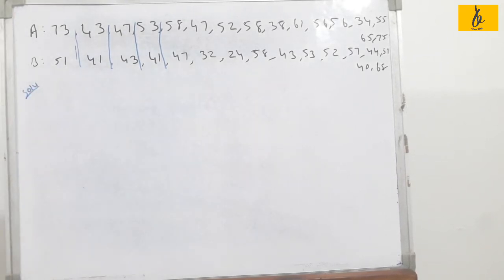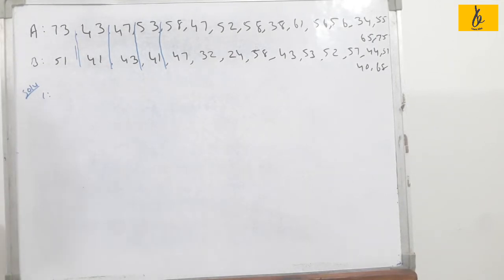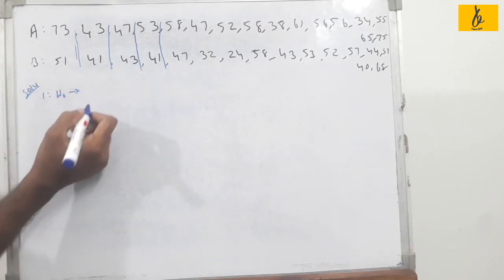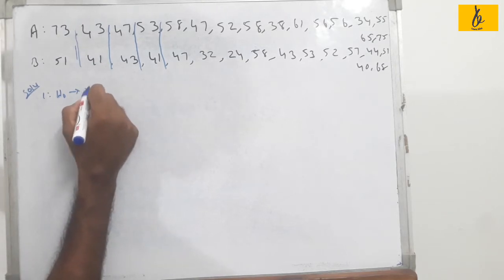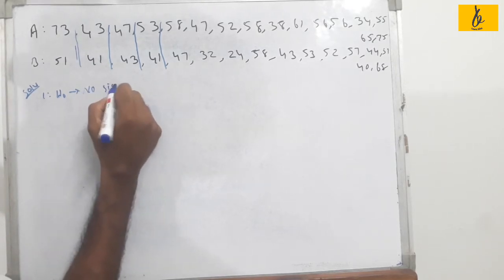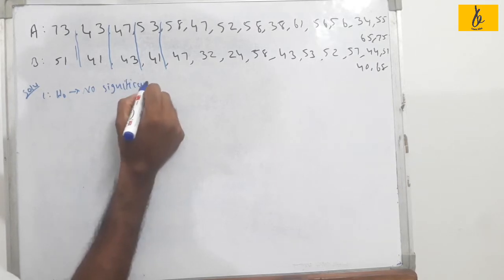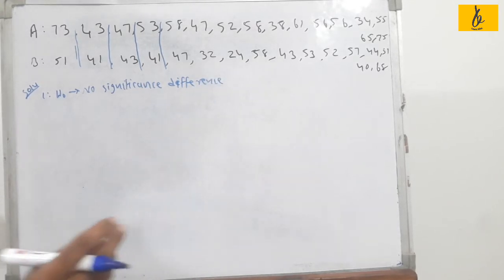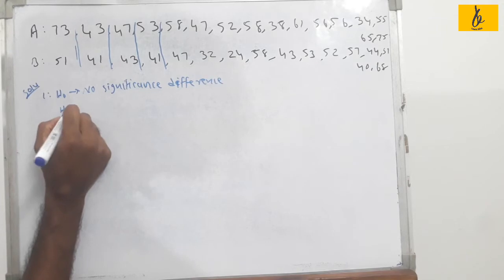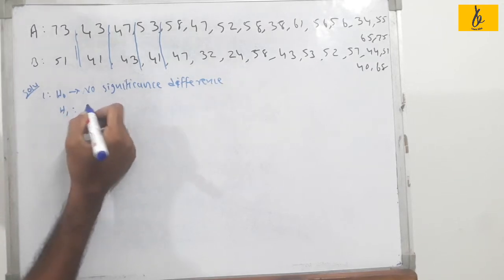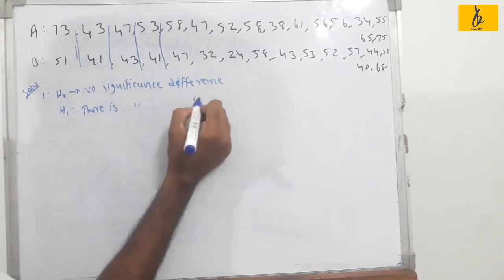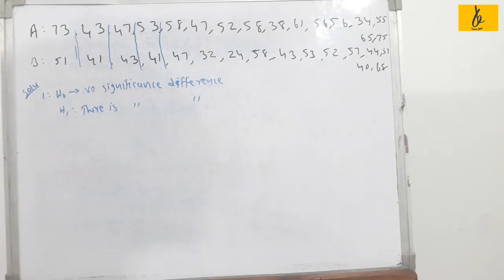Now let's try the solution. The first step is to set the hypothesis. The null hypothesis H0 is that there is no significant difference between the pairs. The alternative hypothesis is that there is a significant difference.